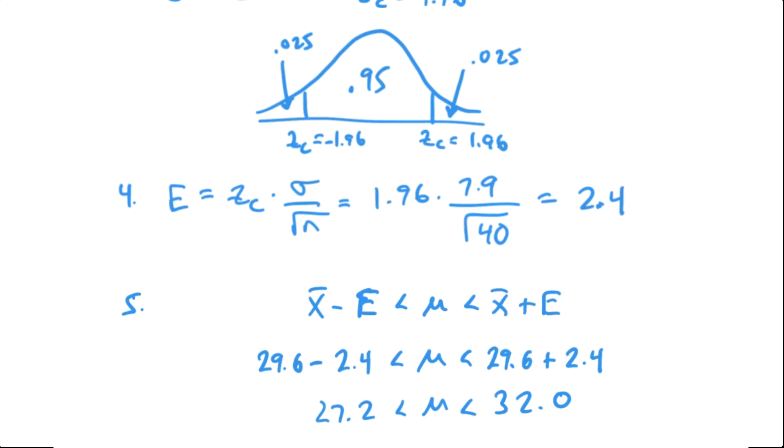Now I rounded to one decimal place here and that's because I rounded my mean to one decimal place. The graphing calculator will probably round to two or three decimal places.